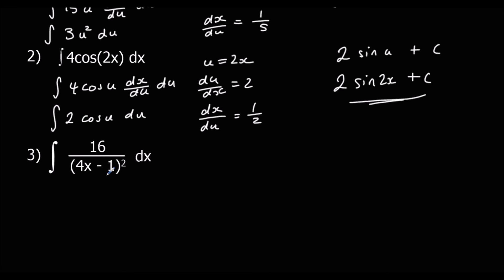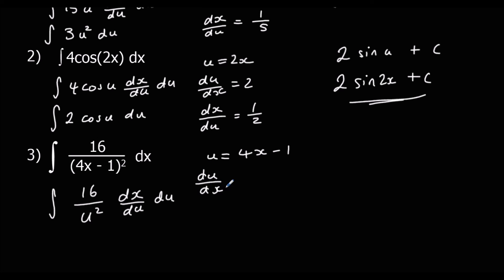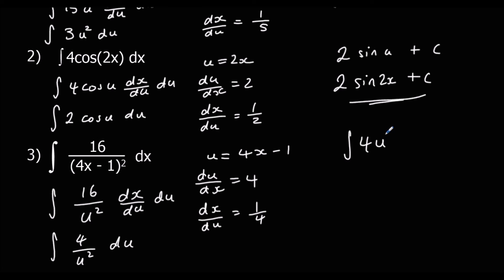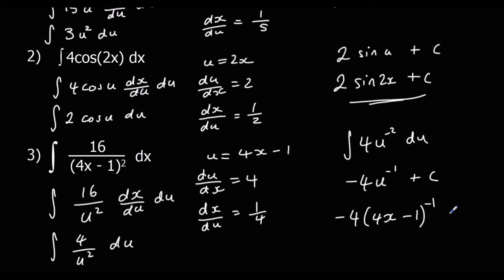Finally, u is 4x minus 1, giving us the integral of 16 over u squared times dx/du with respect to u. du/dx is 4, so dx/du is one quarter. 16 times one quarter is 4, so we integrate 4 over u squared, or 4u to the negative 2, with respect to u. Add 1 to the power to get negative 1, divide by the new power to get negative 4u to the power of negative 1 plus c. Substituting back: negative 4 times (4x minus 1) to the power of minus 1 plus c.